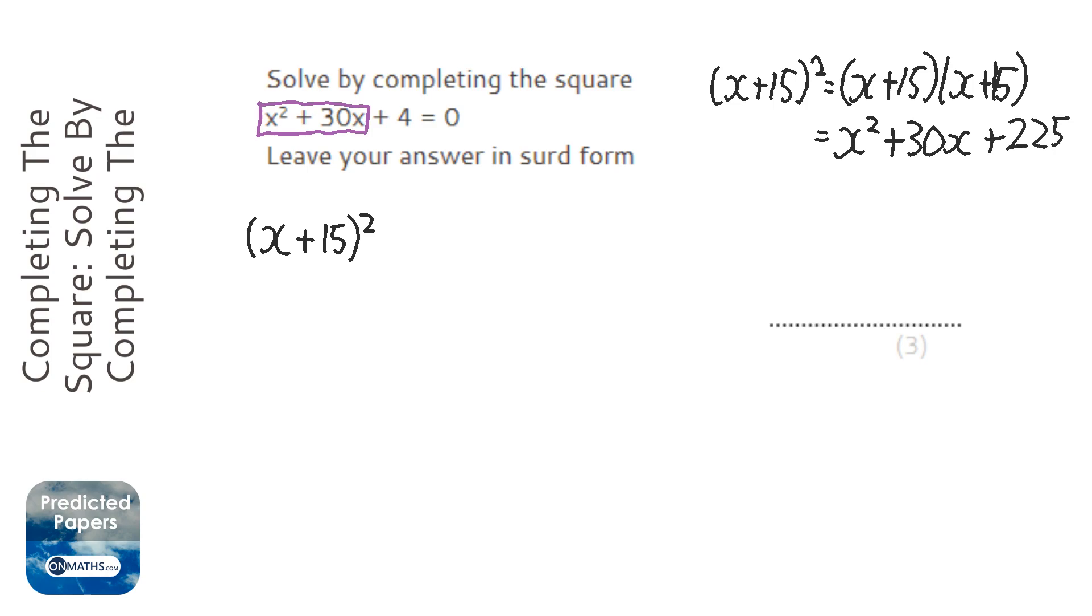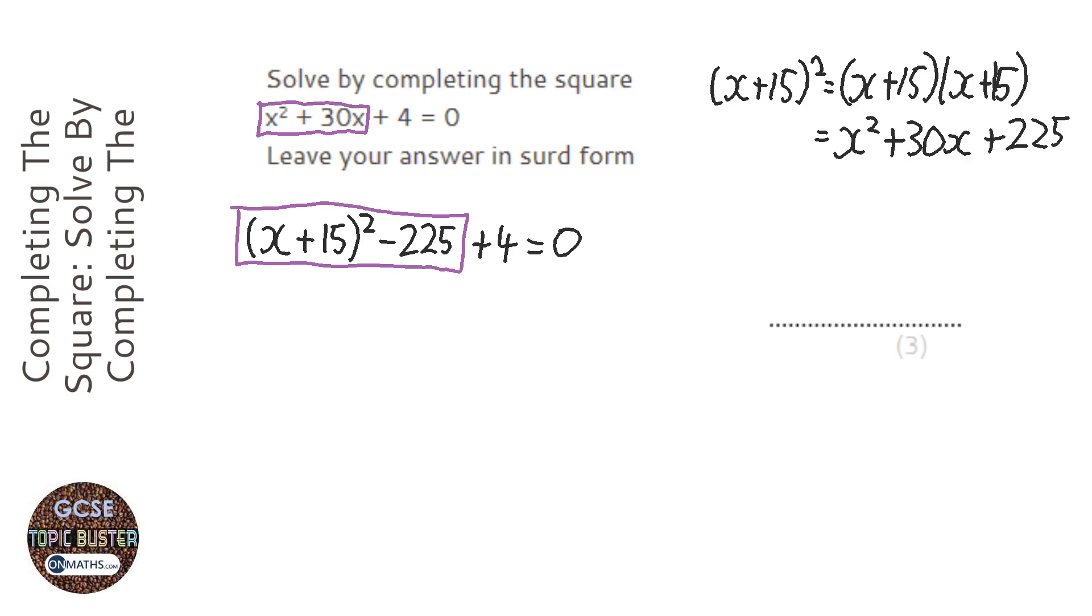So the way of dealing with it is minus 225. So all of this is the same as the purple bit in the question, and then we've got plus 4. Next thing I need to do is put the minus 225 and the plus 4 together.